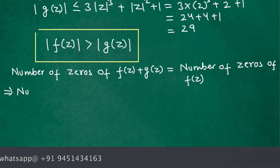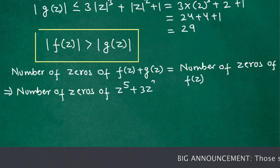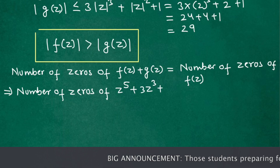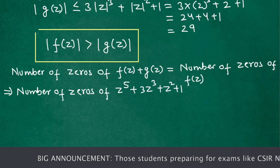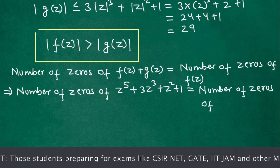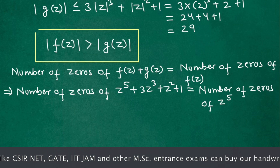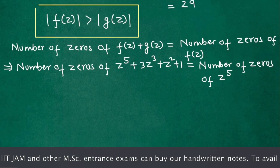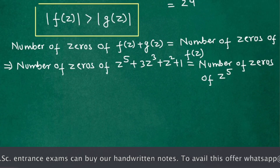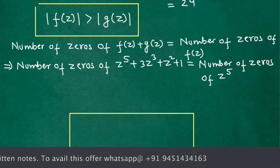Substituting the values: f(z) + g(z) = z⁵ + 3z³ + z² + 1, and f(z) = z⁵. So the number of zeros of our original polynomial equals the number of zeros of z⁵. We can easily find the number of zeros for the function z⁵.